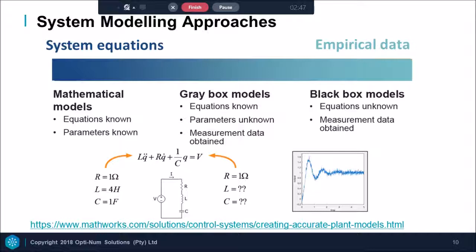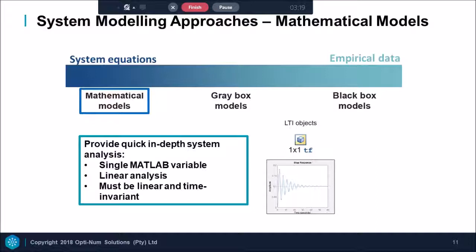There is a vast spectrum of system modelling approaches. Mathematical modelling on the one end, and empirical modelling called black box modelling on the other. Below you can see a plant of an electrical circuit with the equation. For mathematical modelling we have the equation and we have the parameters. For grey box models, there are some unknown parameters. And with black box models we only have the data.